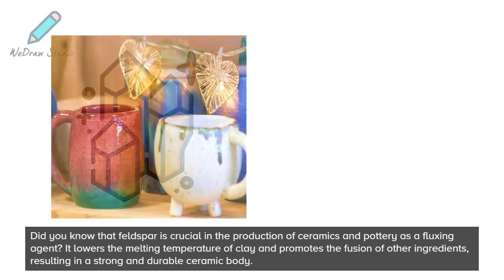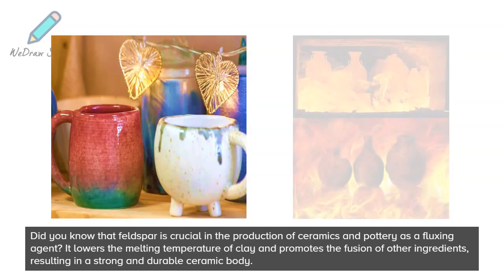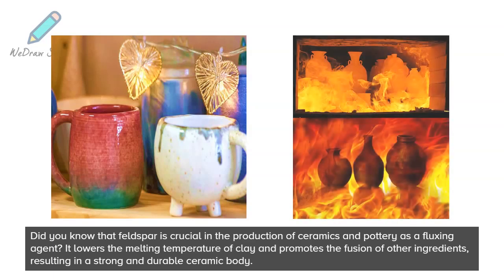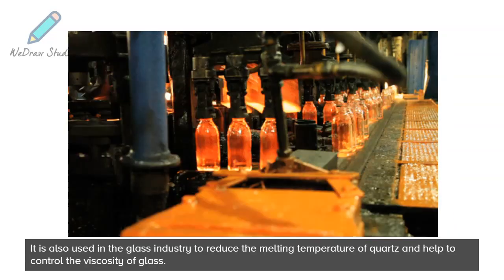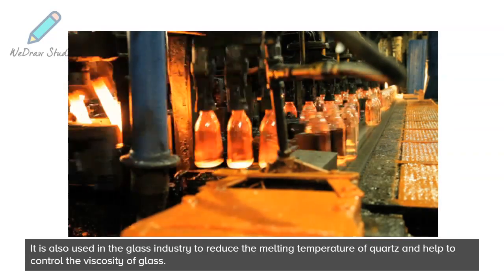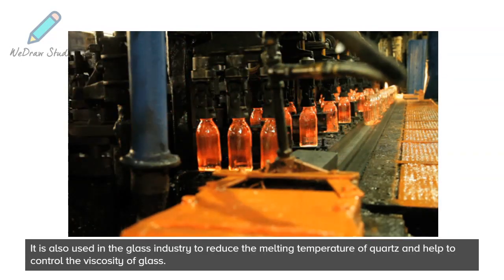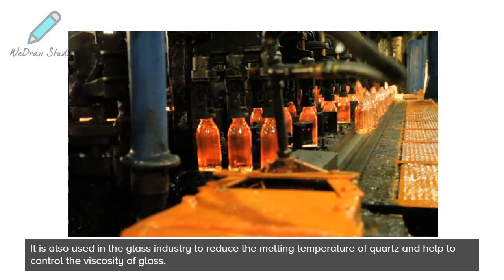Did you know that feldspar is crucial in the production of ceramics and pottery? As a fluxing agent, it lowers the melting temperature of clay and promotes the fusion of other ingredients, resulting in a strong and durable ceramic body. It is also used in the glass industry to reduce the melting temperature of quartz and help control the viscosity of glass.